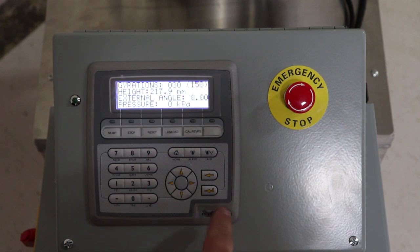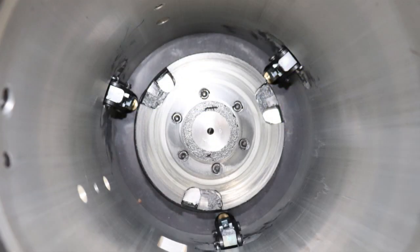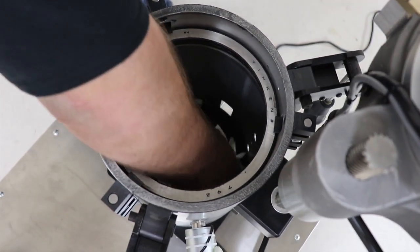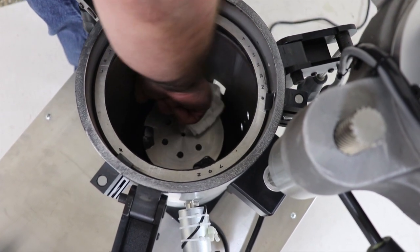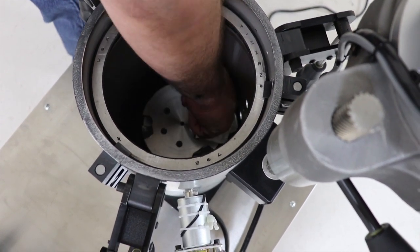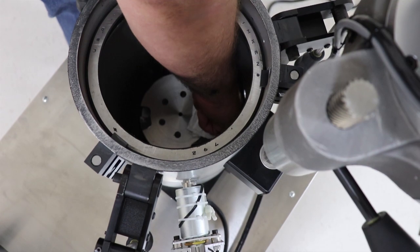Raise the pressure plate approximately one inch and thoroughly clean the spherical seat with a degreasing solution. It is very important to feel for and remove all asphalt that has become wedged between the bottom surface of the pressure plate and the top surface of the spherical seat.